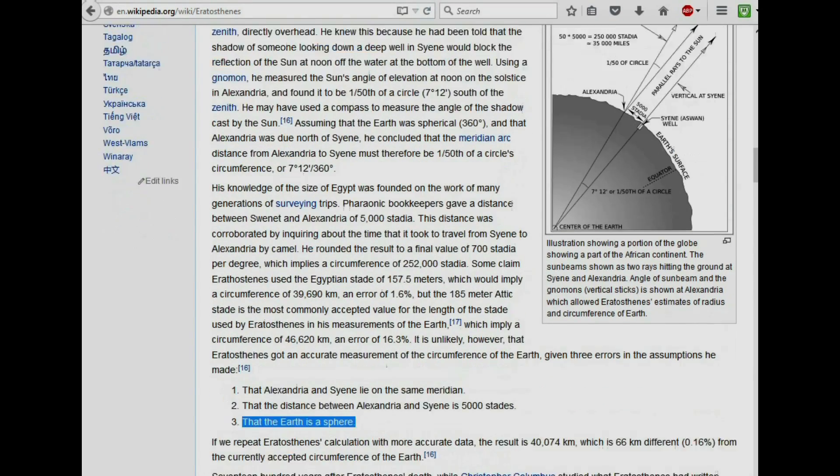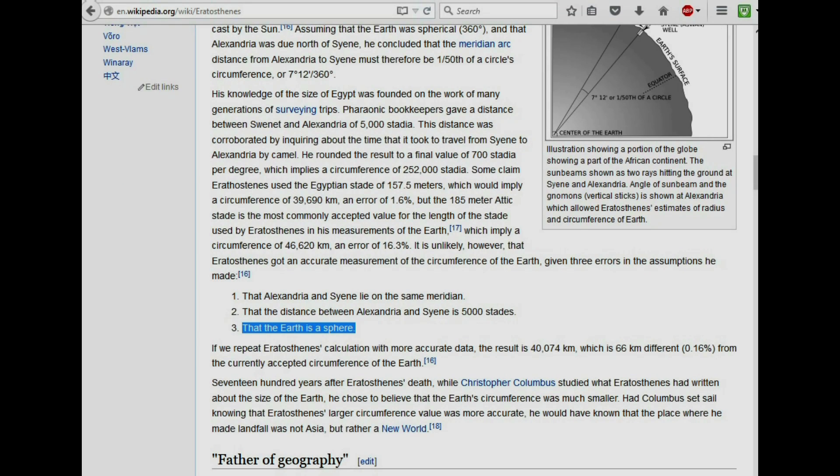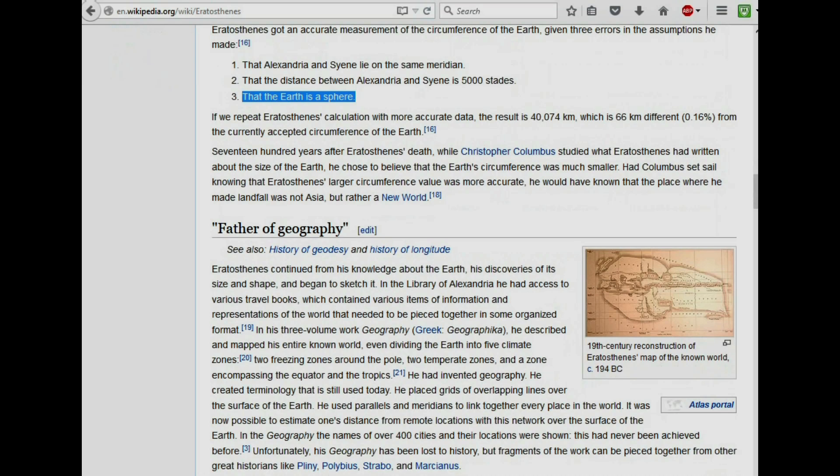Now, the way I look at things is that I personally feel that Eratosthenes wasn't out to calculate the circumference of the Earth, because he may not have even thought that the Earth was round. I don't know, I've never read his books or anything like this. I mean, what is very interesting is that if you look down the page at Eratosthenes, there's a little picture on the right here, and it's a 19th century reconstruction of Eratosthenes' map of the known world.